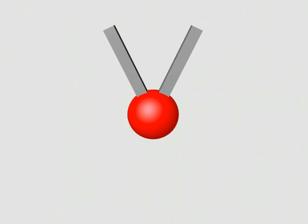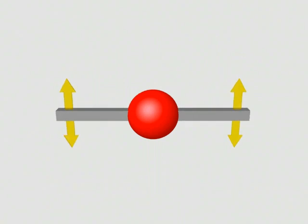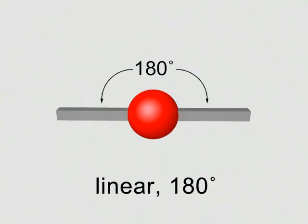The simplest case has two negative groups around a central atom. At any angle less than 180 degrees, electrostatic repulsions push the bars apart. Repulsions are minimized when the bars attain a linear arrangement.